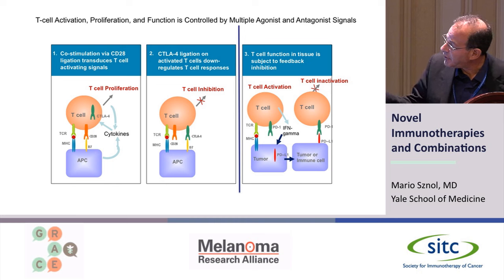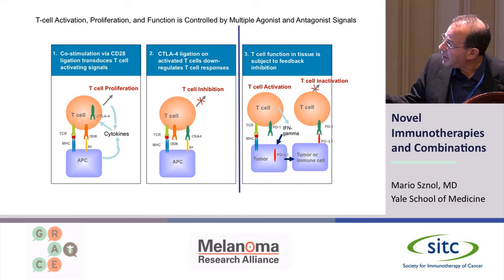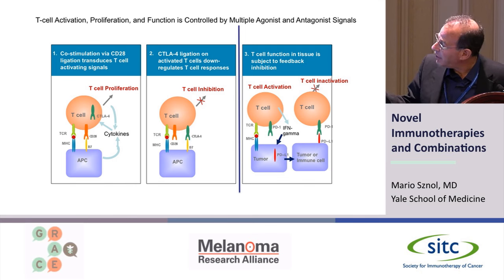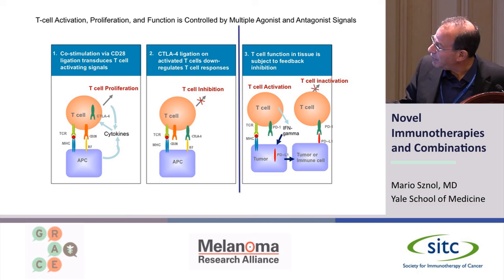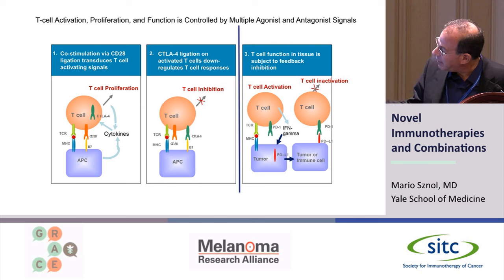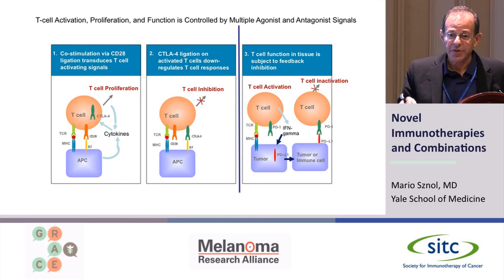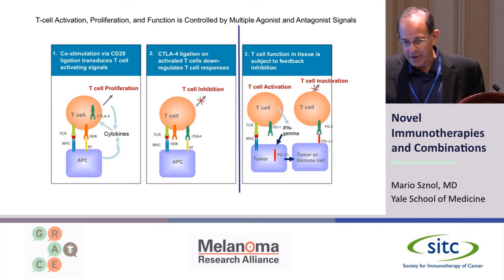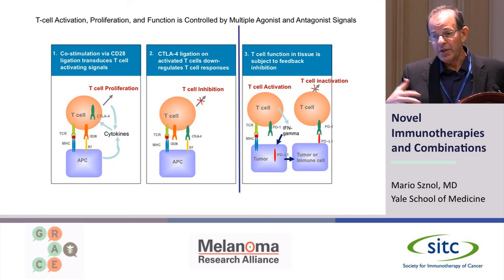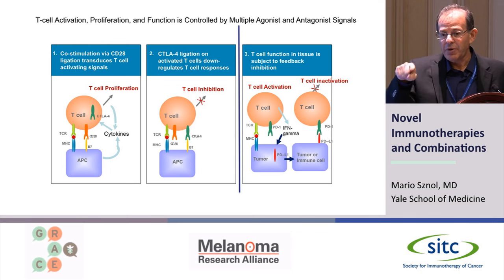CTLA-4 comes onto the surface of the cell, and its interaction with B7 stops the T cell from proliferating. In the tumor, there are other ways of blocking T cell function. The T cell gets in, sees its antigen, gets revved up and starts making cytokines to try to kill the tumor. But this causes the tumor to upregulate PD-L1, which binds to PD-1 on the surface of the T cell — and this interaction basically inactivates the T cell, stopping it from making cytokines and killing.